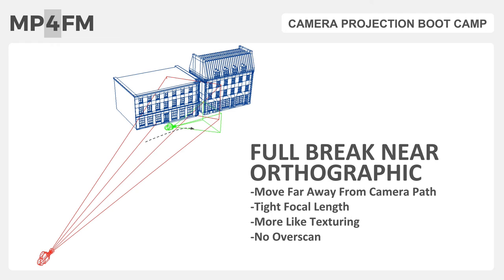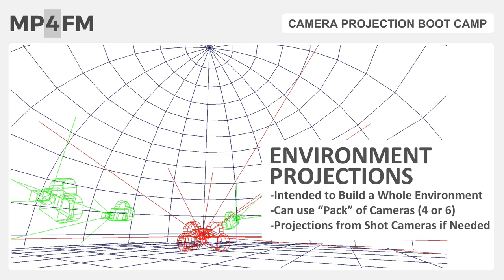An extreme variation of a full break is where the projection camera is so far away and the focal length is so tight that it becomes near orthographic. This has the benefit of being able to project onto a lot of surfaces, but it becomes more like a texturing task.